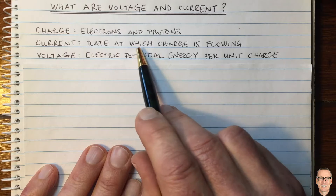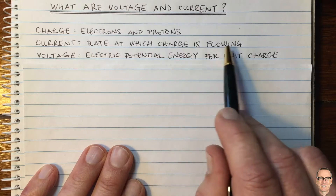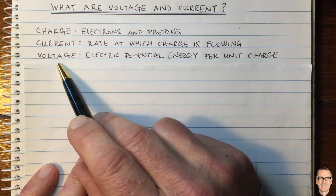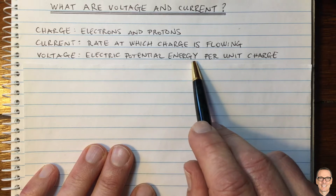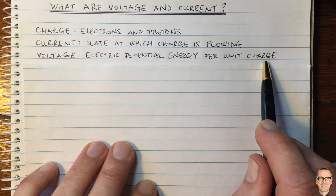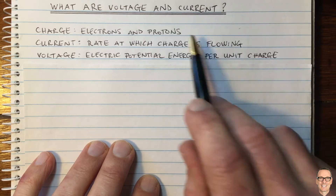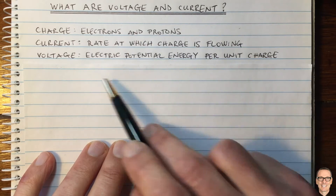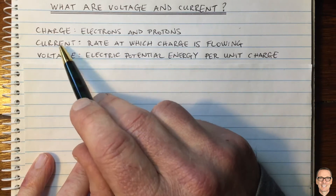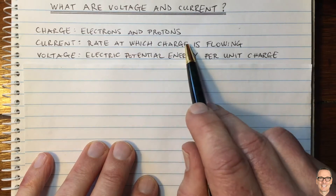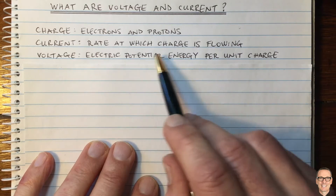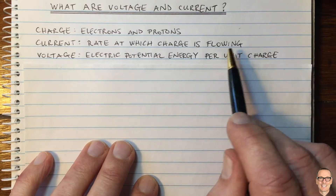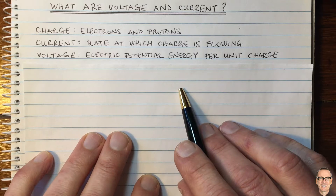Current is the rate at which charge is flowing, and voltage is electric potential energy per unit charge. So what do these things mean? What causes the charge to flow, and how fast does it flow? Let's answer all of these questions.